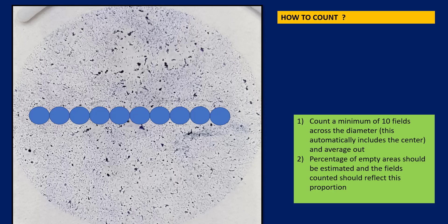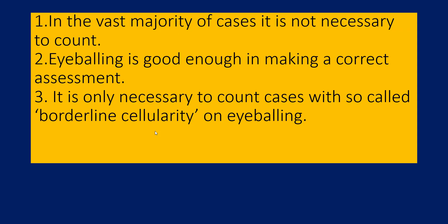This is a ThinPrep smear showing 10 fields — at 40x, 20x, or 10x — and the approach is basically the same. You go right through the center, always include the center, count a minimum of 10 fields, take the total, divide by 10, and see if the count is above your cutoff. The good news is that in the vast majority of cases, it is not necessary to count. Eyeballing is good enough for a correct assessment. Counting is only necessary for cases with so-called borderline cellularity where you are not really sure.